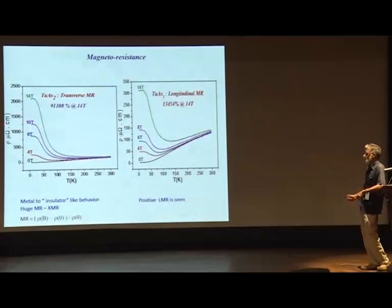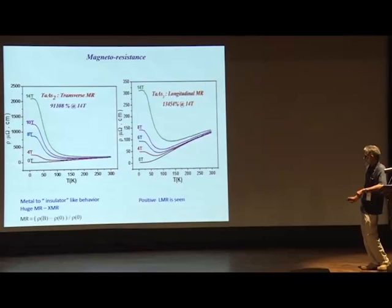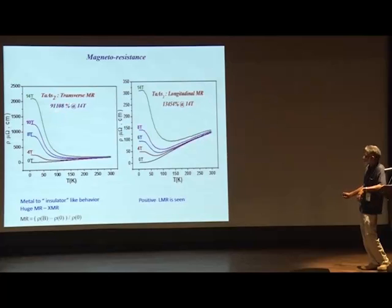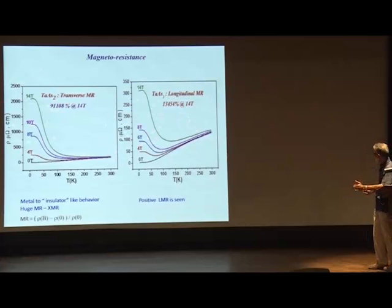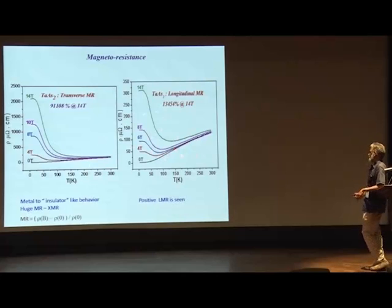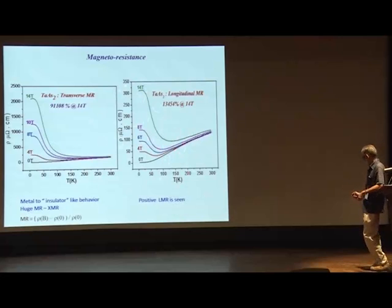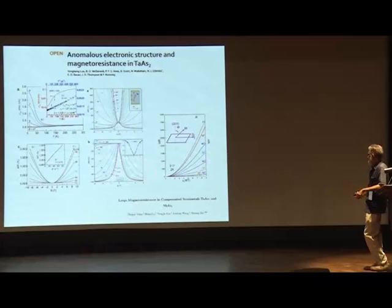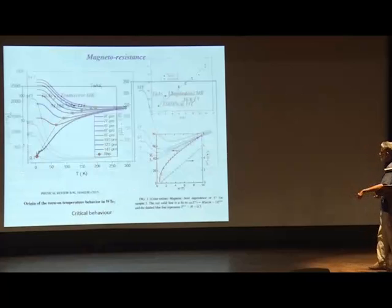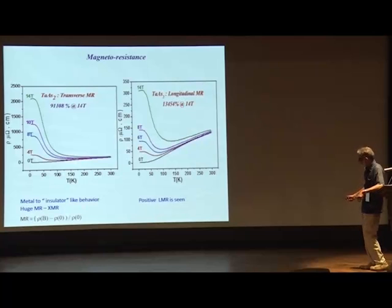Our results on TaAs₂ magneto resistance as a function of temperature at various fields show metallic behavior at low field; as the field is raised the resistivity goes up and saturates. We obtain about 90,000% at 14 tesla. However, in the longitudinal configuration we do not get a negative longitudinal magneto resistance — a positive longitudinal MR of smaller magnitude is still observed.